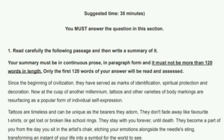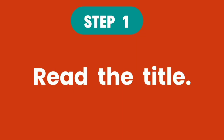When preparing a summary, these are the steps to follow. Step 1: Read the title. When you read the title, you gain insight about what the text is about. The title often highlights the main topic and suggests what the main idea may be.